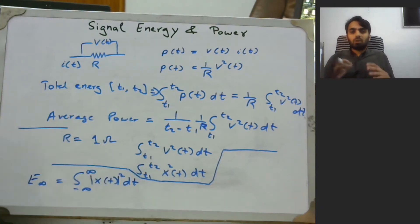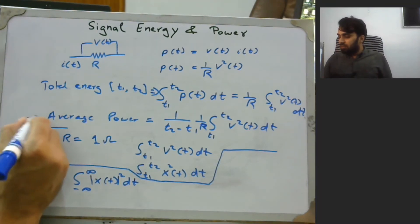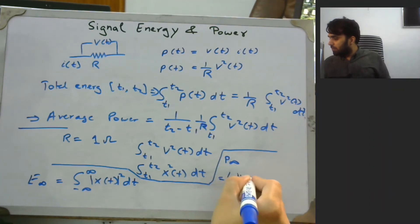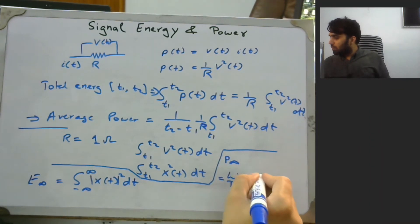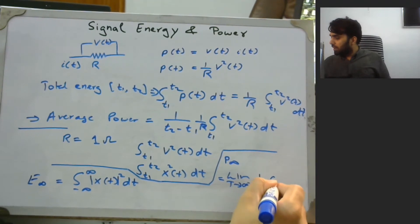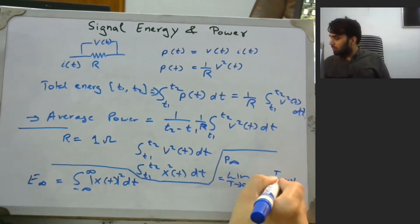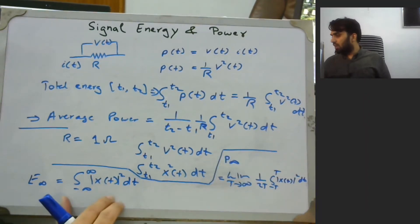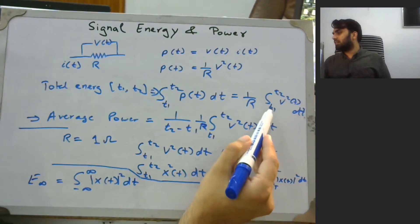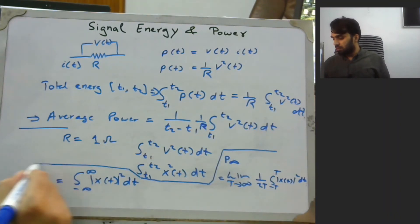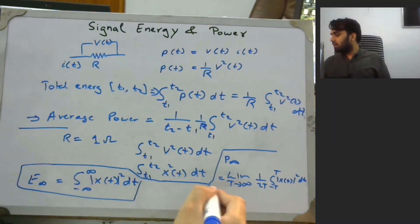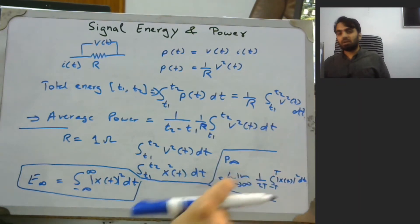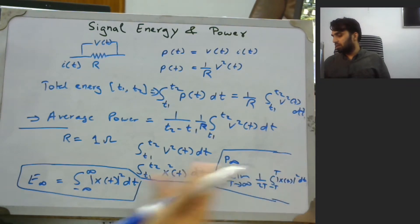The time-averaged power over an infinite interval is P_infinity, defined as the limit as T → ∞ of (1/2T) times the integral from −T to T of |x(t)|² dt. In both cases, the limits have been extended from t1, t2 to −∞ and +∞, giving us our two major results: E_infinity and P_infinity.